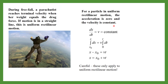Acceleration being zero means velocity is constant. We know that the equation for velocity is v = dx/dt. If v is constant, we can take v out of the integral, and this straightforward integration gives x = x₀ + vt. This equation is used for problems involving uniform rectilinear motion. You cannot use this equation for accelerated motion.